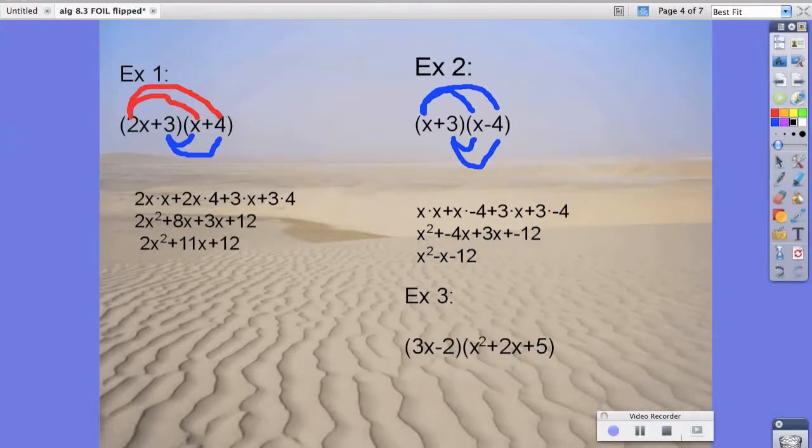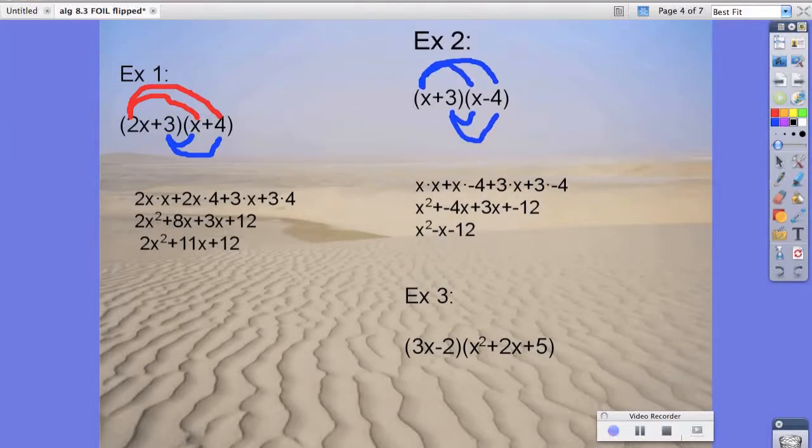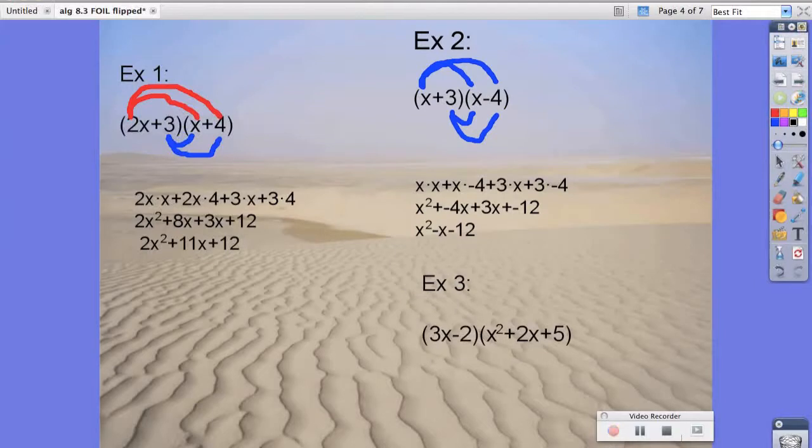And number 3, or example 3, would be the spiciest one out of the group. And the reason being is because we're multiplying a binomial to a trinomial.